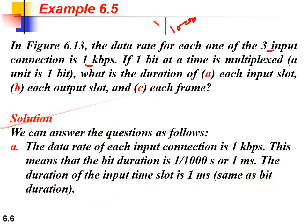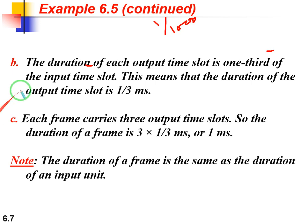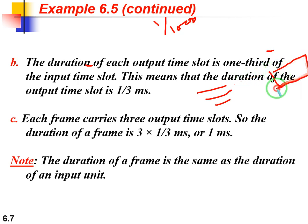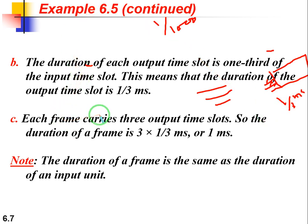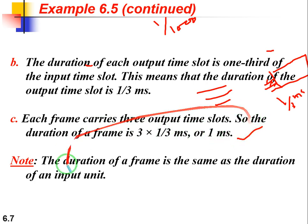In part B, each output slot duration must be equal because of synchronization. The duration of each output slot is one-third of the input time slot — that is one-third of a millisecond — because we have three inputs. So each output can be one-third millisecond. In part C, each frame carries three output time slots, so three multiplied by one-third millisecond equals one millisecond. The duration of a frame equals the duration of the input unit.